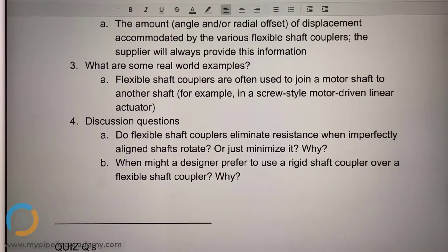Do flexible shaft couplers eliminate resistance when imperfectly aligned shafts rotate, or do they just minimize it, and why?